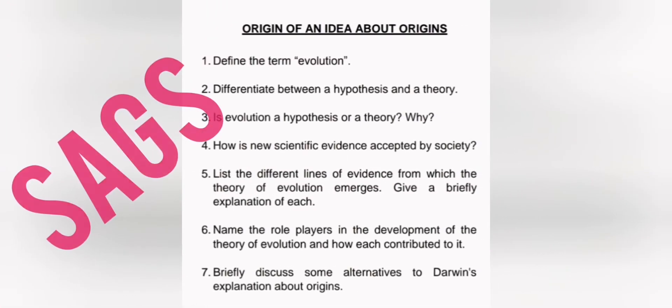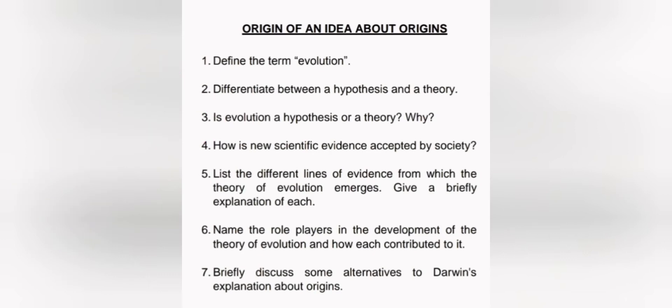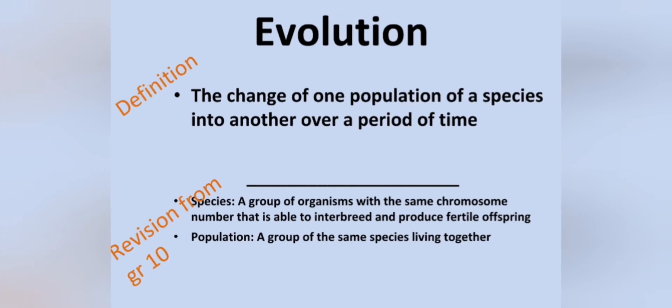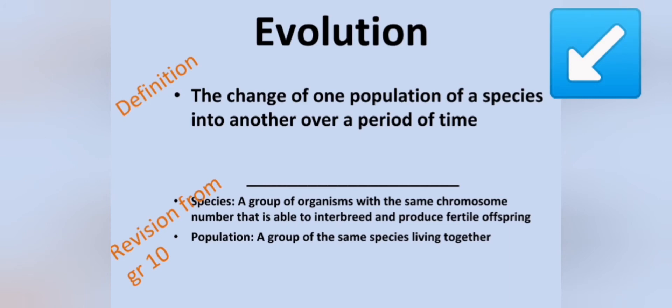According to the subject assessment guidelines of the IEB, in this chapter on the origin of an idea about origins, there are seven things that you need to understand. For the first three, we have to look back at what we did in grade 10 and 11. In grade 10 we already learned that evolution can be defined as a change of a population of a species into another species over a period of time.